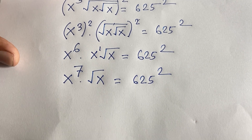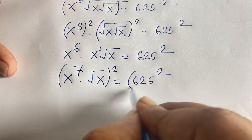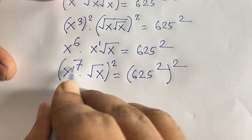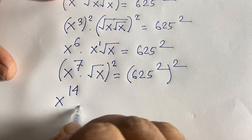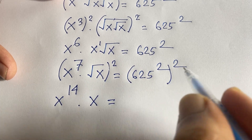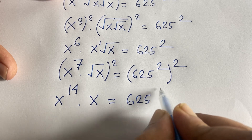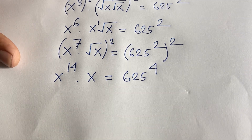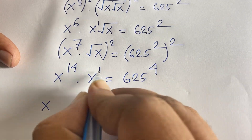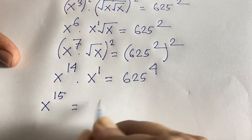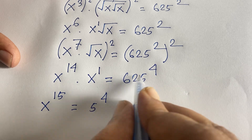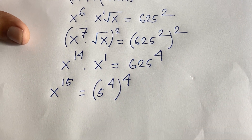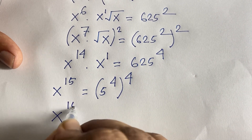I square both sides one more time. x to the power of 7, squared, gives x to the power of 14. Adding the remaining exponent of 1 gives x to the power of 15. The right side becomes 5 to the power of 4, squared, which is 5 to the power of 16. So x to the power of 15 equals 5 to the power of 16.